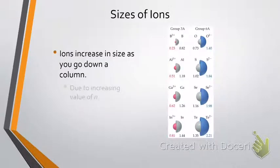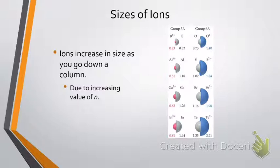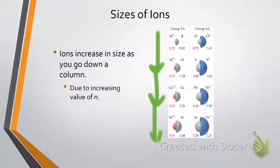What happens if we look at the sizes of ions as we go down the periodic table? This should make sense: as you go down the periodic table, whether we're talking about cations or anions, they increase in size because you're increasing the principal quantum number — you're increasing the number of energy levels. We see this with boron 3+ versus aluminum 3+ versus gallium 3+ or indium 3+. The same thing is true with anions — they get larger as you go down the periodic table.